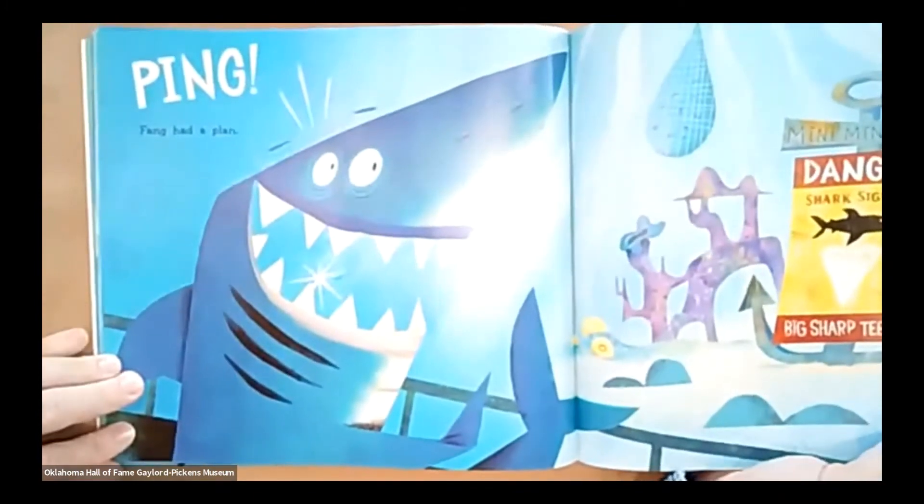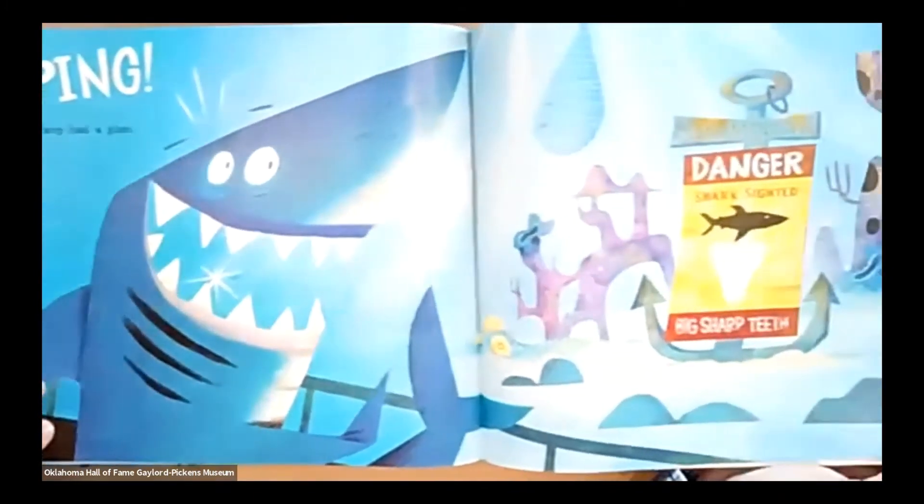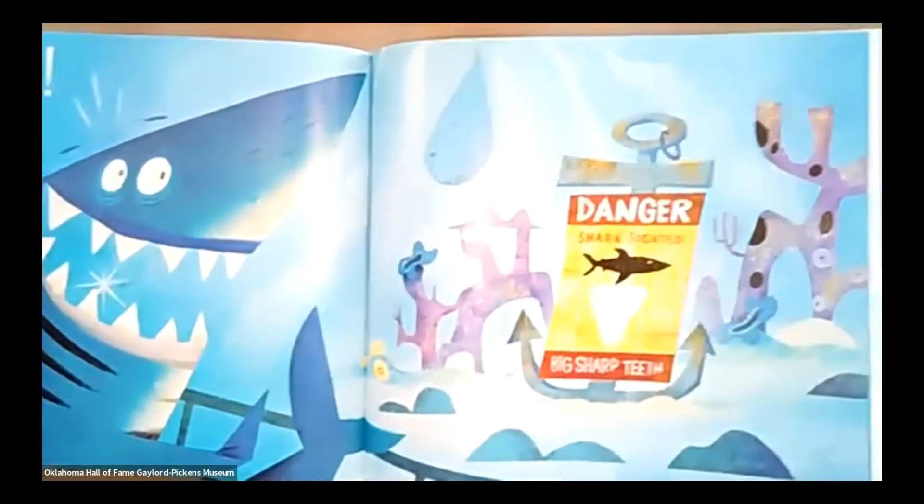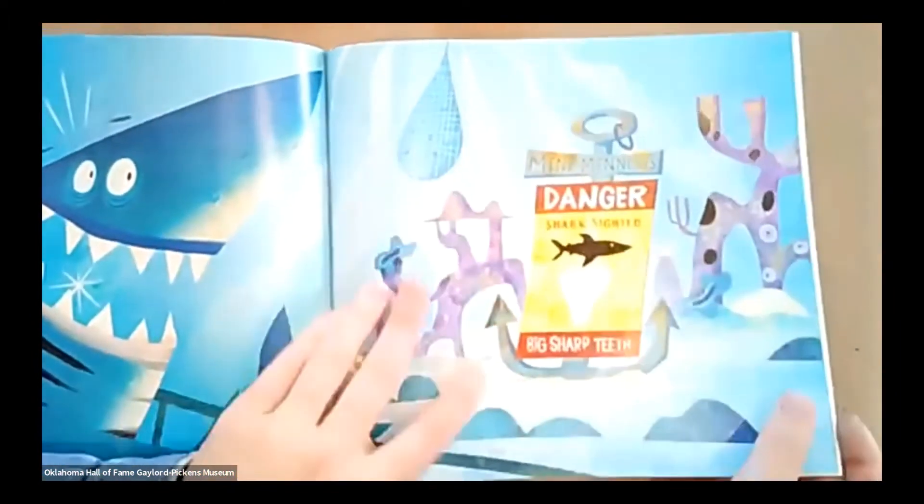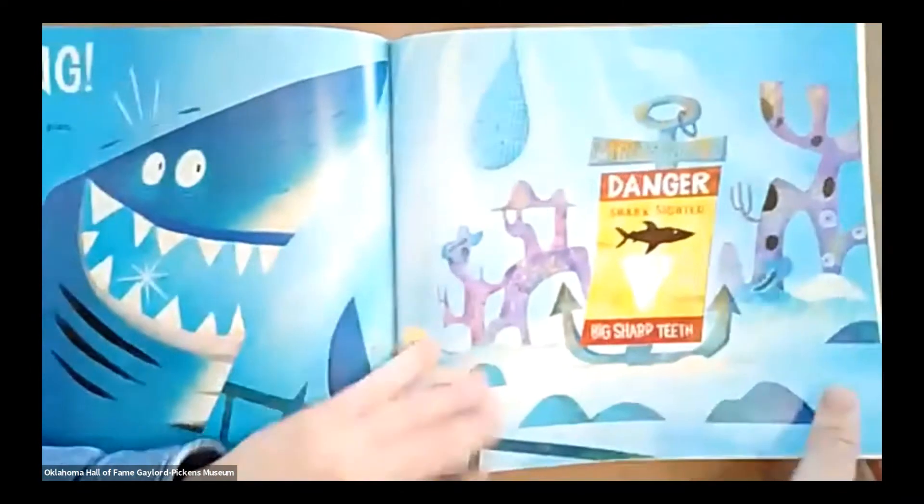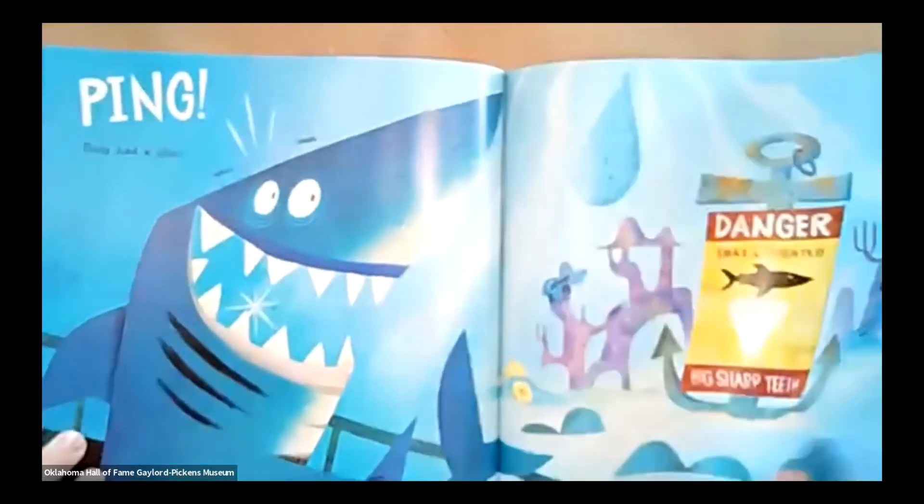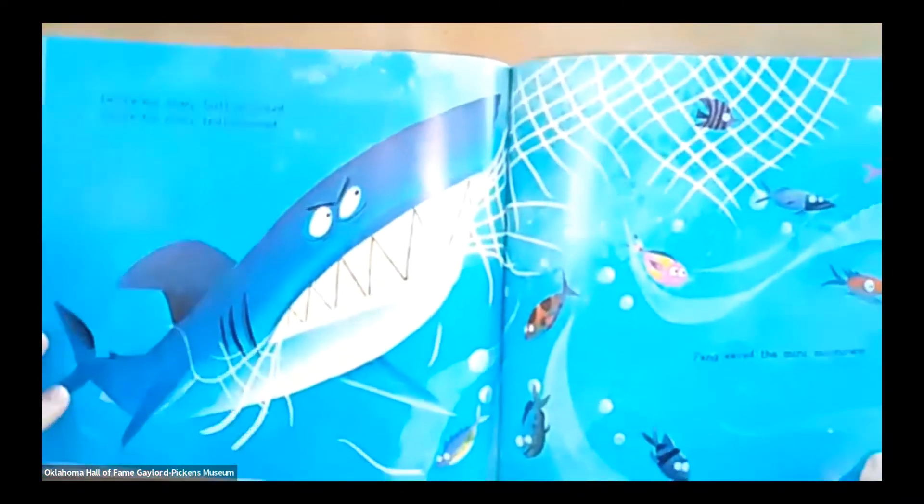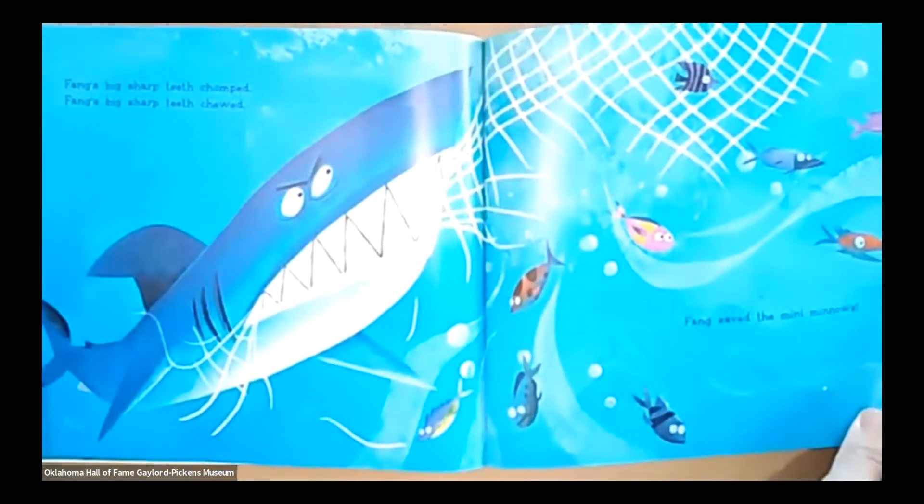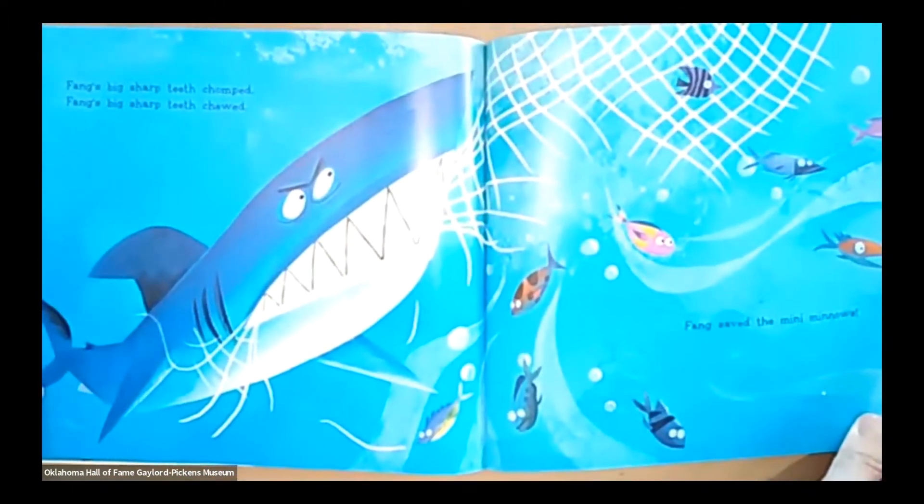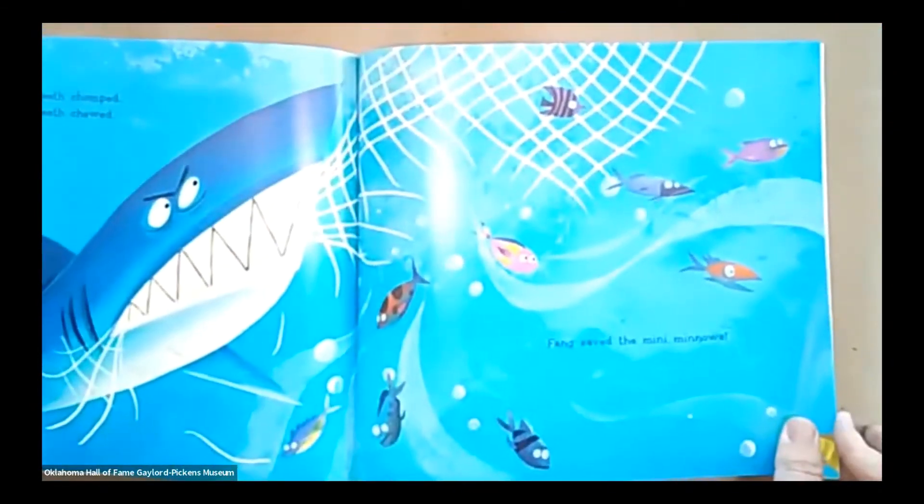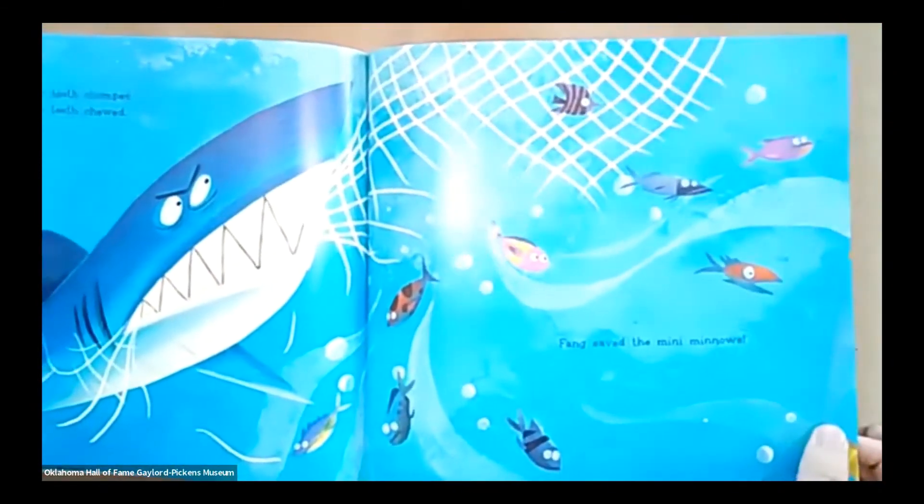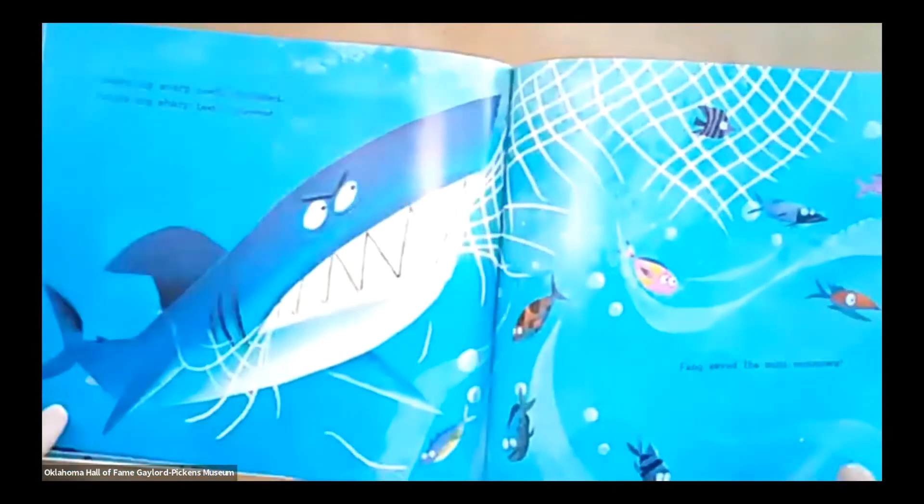Ping, Fang had a plan. So Fang has a plan. Oh, and it says danger, shark-sided, big, sharp teeth. What's Fang going to do? Fang's big, sharp teeth chomped. Fang's big, sharp teeth chewed. Fang saved the mini minnows. Oh, yay! Fang to the rescue!